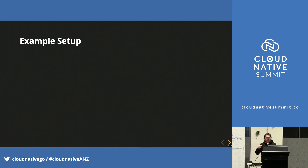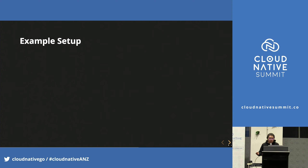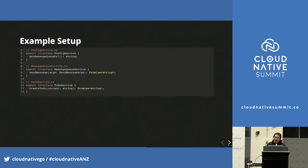Let's look at a slightly more complex example to demonstrate the setup of dependency injection. Imagine we have a to-do list application on AWS. The user sends an HTTP request to create a to-do item, which goes through API Gateway and is handled by a Lambda function. Once the request is handled, we put a message to the message queue saying 'to-do item created', and let another Lambda function do further processing. We have three services, each defining one method: we can get the message queue URL from ConfigService, send a message using MessageQueueService, and create a to-do with TodoService.